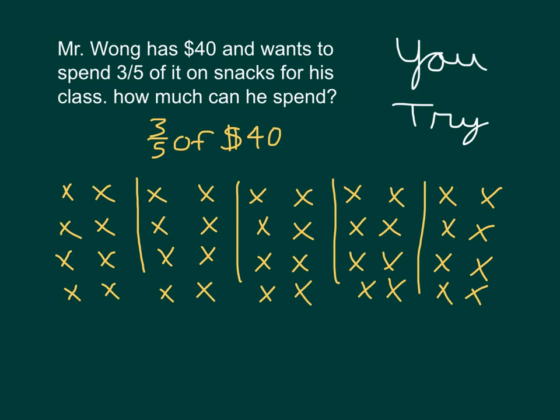So 1/5 of $40, we have 8 within that group there. We're looking at 3 of those groups because we're looking at 3/5. So here's 1/5 is $8 already, another fifth is another $8, and this third fifth is also $8. So we put them all together. That's 8 plus 8 plus 8, which is equal to $24. You also might have done $8 times 3, equaling $24. 3/5 of $40 is $24.